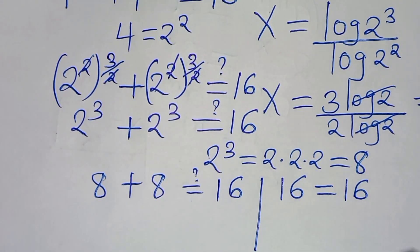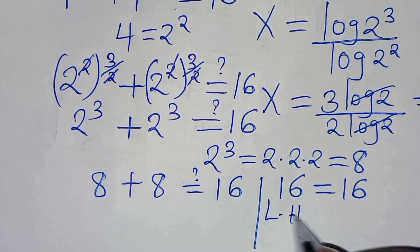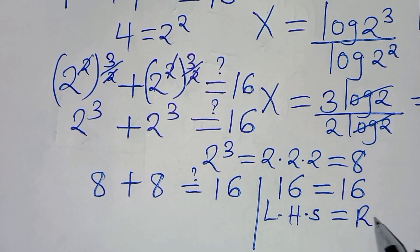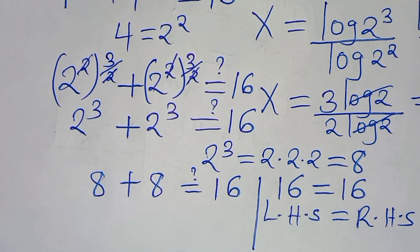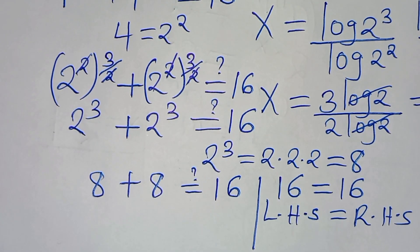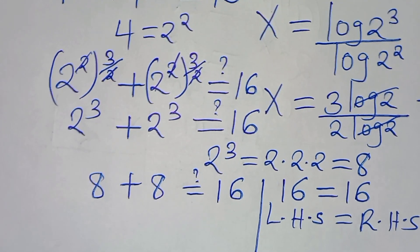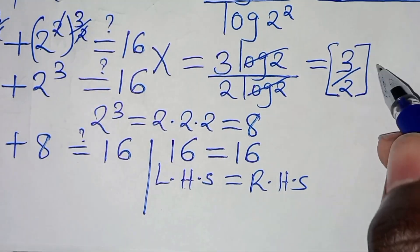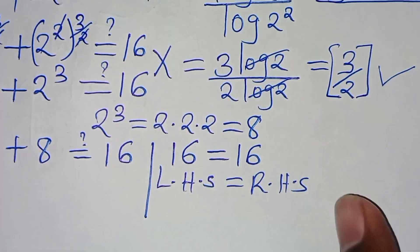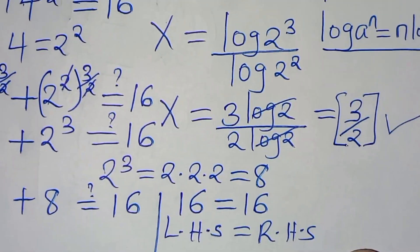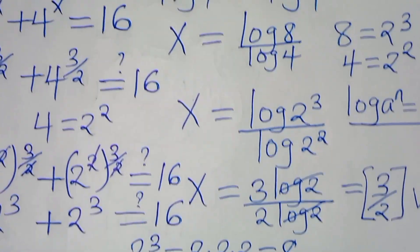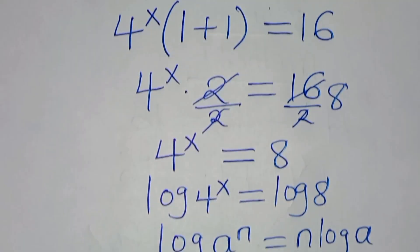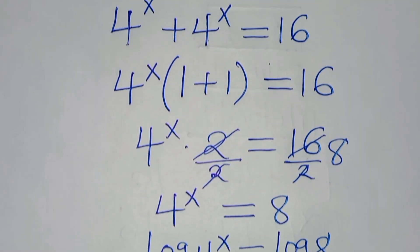Therefore 8 plus 8 is 16, which equals 16. This proves that x equals 3 over 2 satisfies the equation. Kindly follow the steps, like this video, and subscribe. See you in the next video.